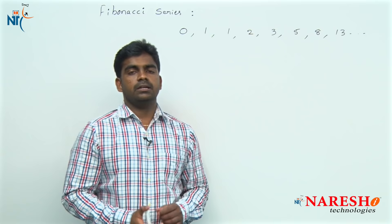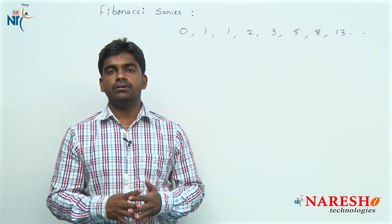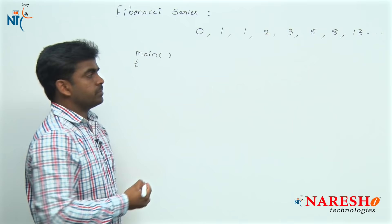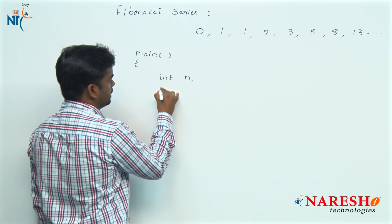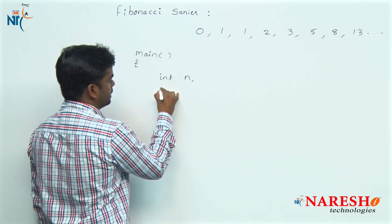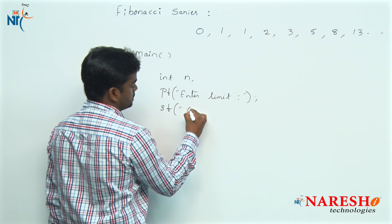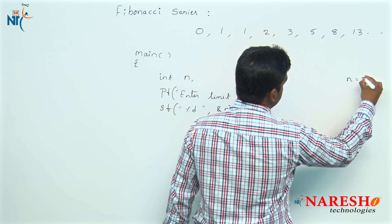How do we write the program for this? Generally, they will ask: print the first N elements in the Fibonacci series. The easiest way is to start from the main function and first ask the user for the limit — declare int n, print 'Enter limit', and read that n value using scanf with %d.